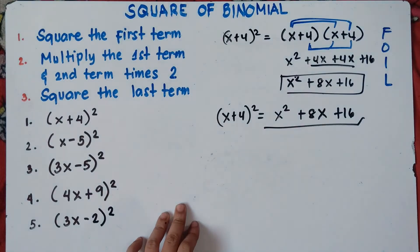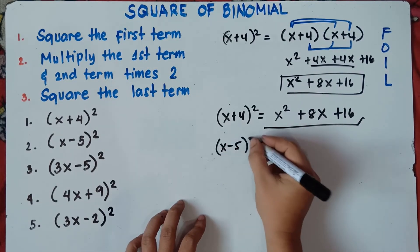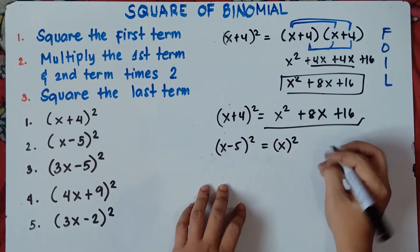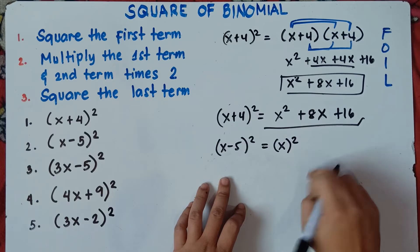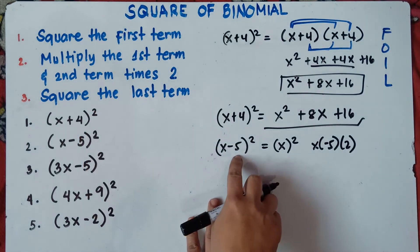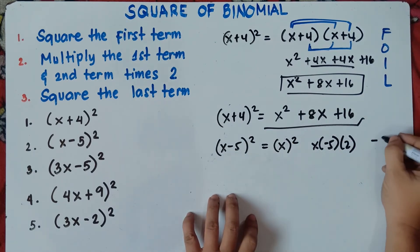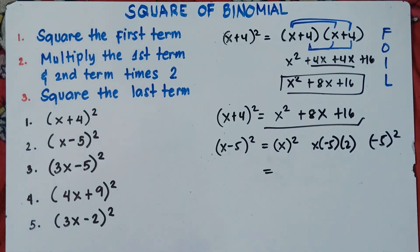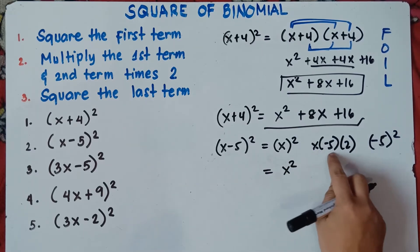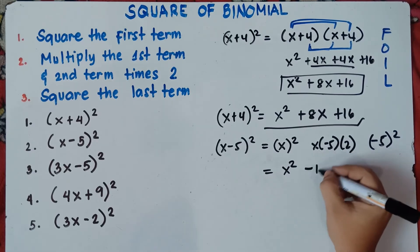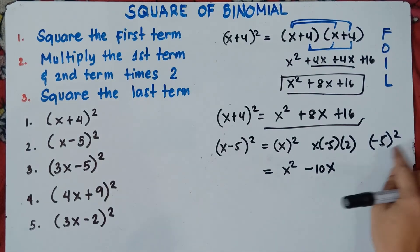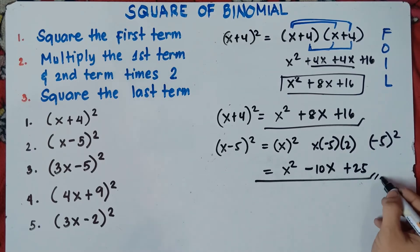Let's try number 2: x minus 5, quantity squared. First, square the first term: x squared. Second, multiply the first term and second term: x times negative 5 times 2, that's negative 10x. Third, square the last term: negative 5 times negative 5. Remember, negative times negative is positive, so that's positive 25. Answer: x squared minus 10x plus 25.